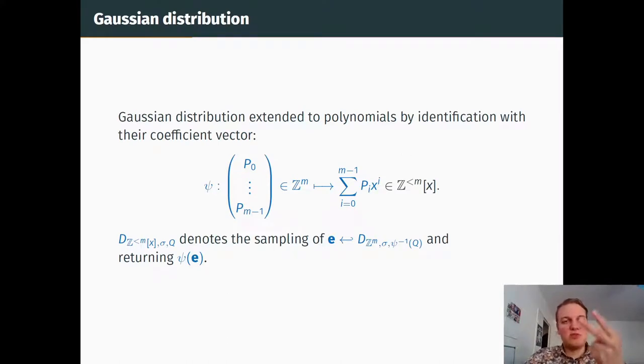Before stating the formal definition of the problems, I need to give you two tools. The first one is how to sample Gaussian distribution over polynomials. It's actually done by identifying the polynomial with its coefficient vector. We introduce notation for sampling first the coefficient vector and then turning it into a polynomial.